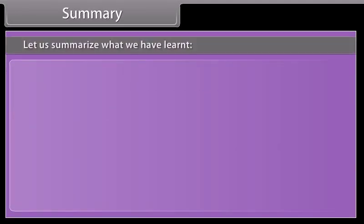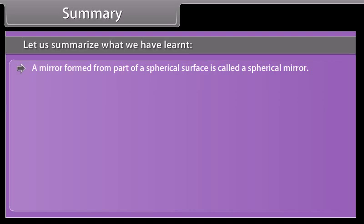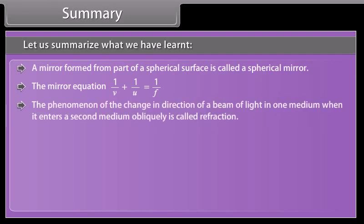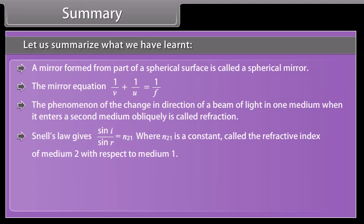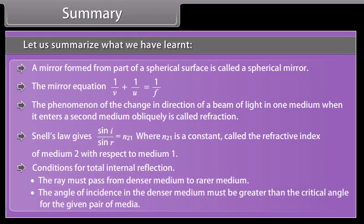Summary: A mirror formed from part of a spherical surface is called a spherical mirror. The mirror equation is 1/v + 1/u = 1/f. The phenomenon of the change in direction of a beam of light when it enters a second medium obliquely is called refraction. Snell's Law: sin i / sin r = N₂₁, where N₂₁ is the refractive index of medium 2 with respect to medium 1. Conditions for total internal reflection: the ray must pass from a denser to a rarer medium, and the angle of incidence in the denser medium must be greater than the critical angle.